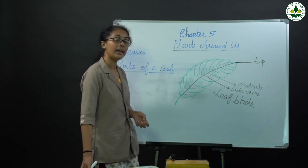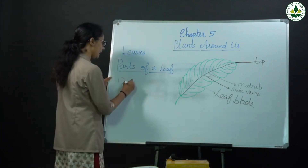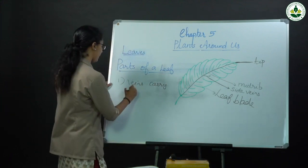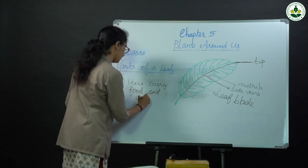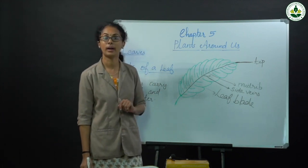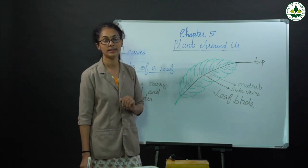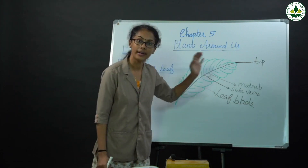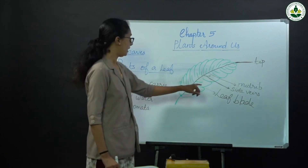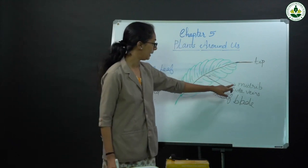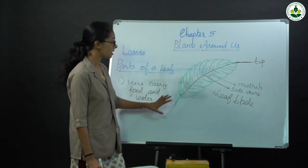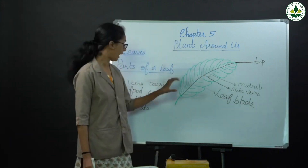What is the function of veins? Veins carry food and water. The small openings in the surface of leaves are known as stomata. So: leaf blade, tip, mid rib or main vein, side veins — veins carry food and water — and small openings in the surface of leaves are known as stomata.